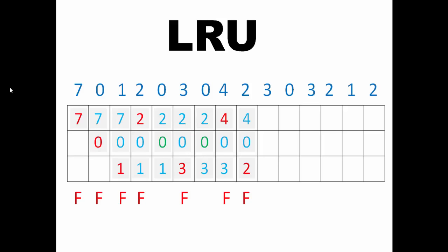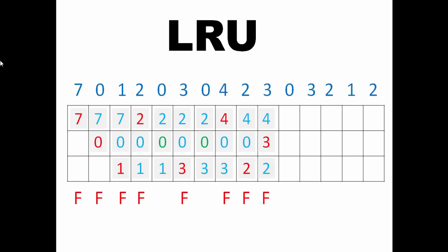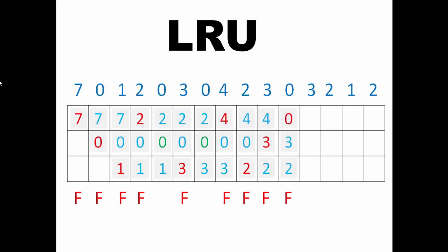The next page is 3, which is not present. Looking at usage, 2 is the most recently used, then 4, then 0 — so 0 will get removed and 3 will get added. The next page is 0, which is not present. Now 3 is the most recently used, then 2, then 4 — so 4 will get removed and 0 will get added. There will be a page fault and 3 and 2 will remain.